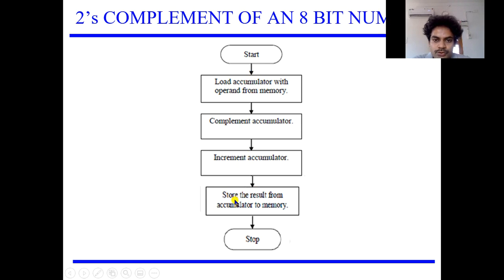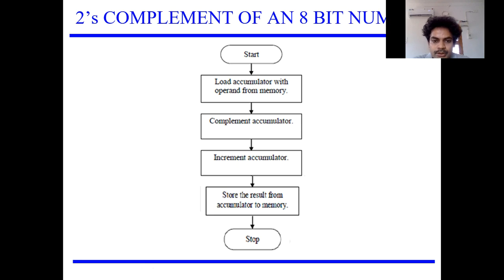I hope you understood the flowchart. First, get the data from memory and store it into the accumulator. Complement the accumulator value — that is, invert the values. Next, add 1 to it to make the 2's complement. And then move that particular accumulator value to the memory. This is my flowchart outline of what I am going to do.